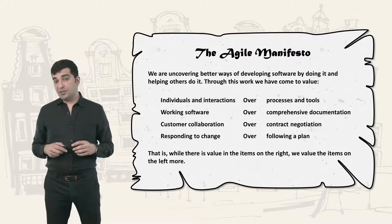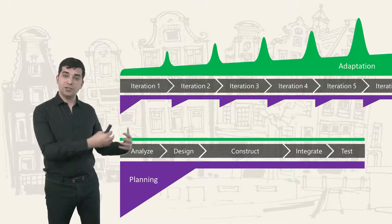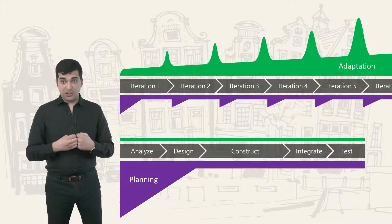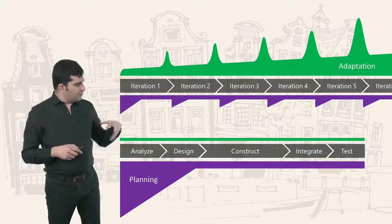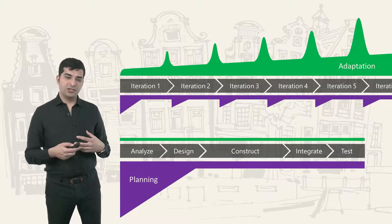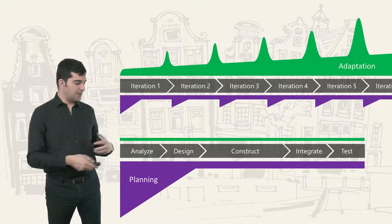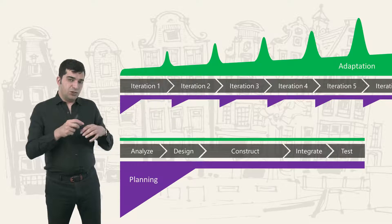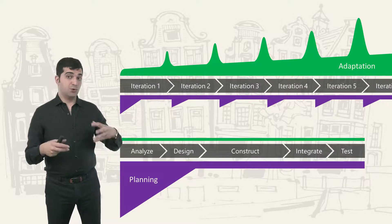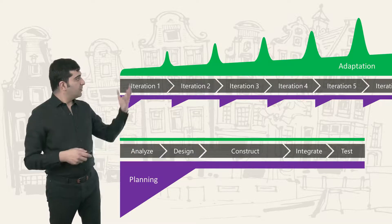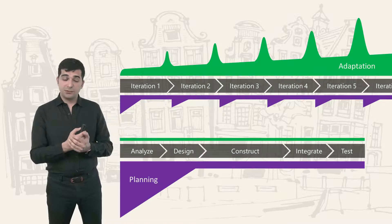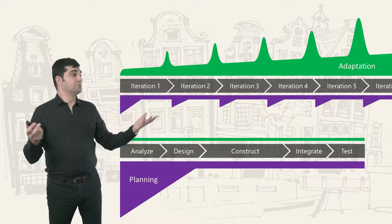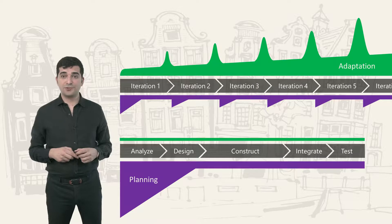The last value is responding to change over following a plan. In a predictive system, we have a comprehensive upfront plan — our best way to do the project based on initial understanding. When a change is needed, it's usually more expensive because we have to change plans and designs, and predictive systems tend to have more dependencies, meaning more things to fix. In an adaptive project, we don't have that upfront plan, so new ideas come in — it's even difficult to call them changes — and the customers like it.